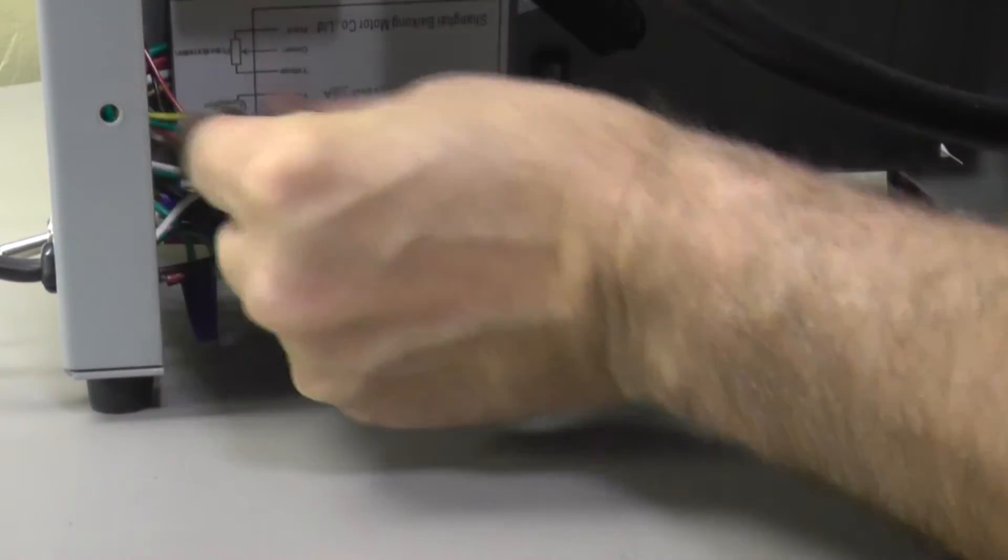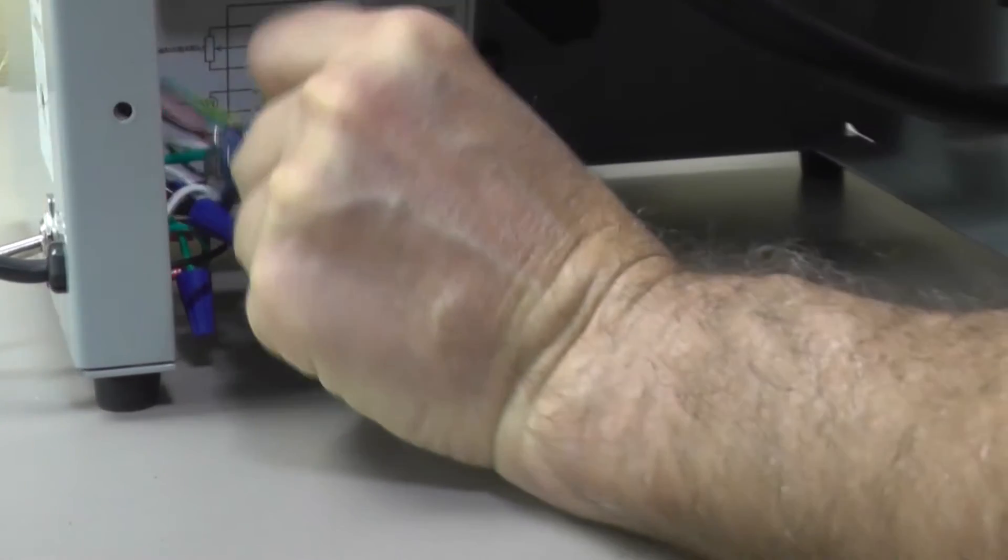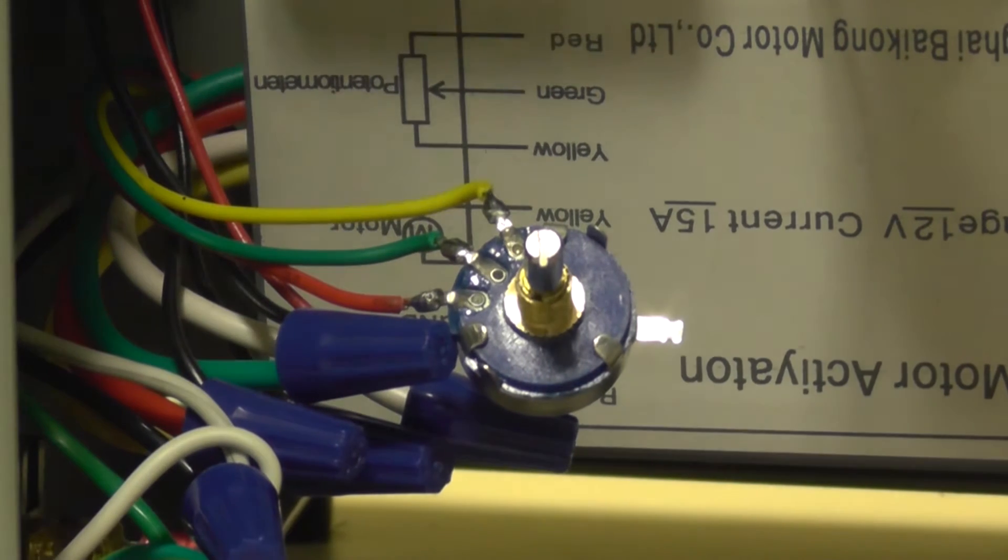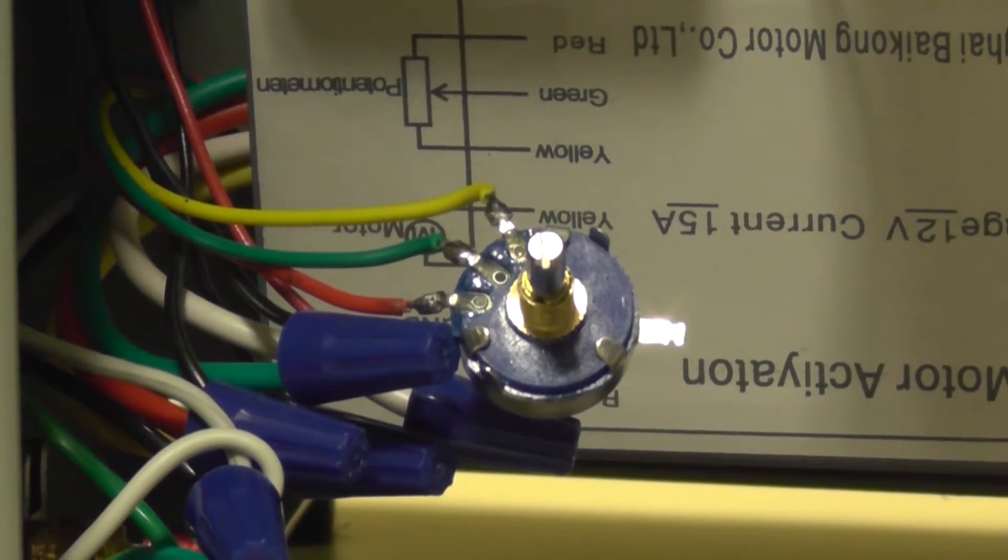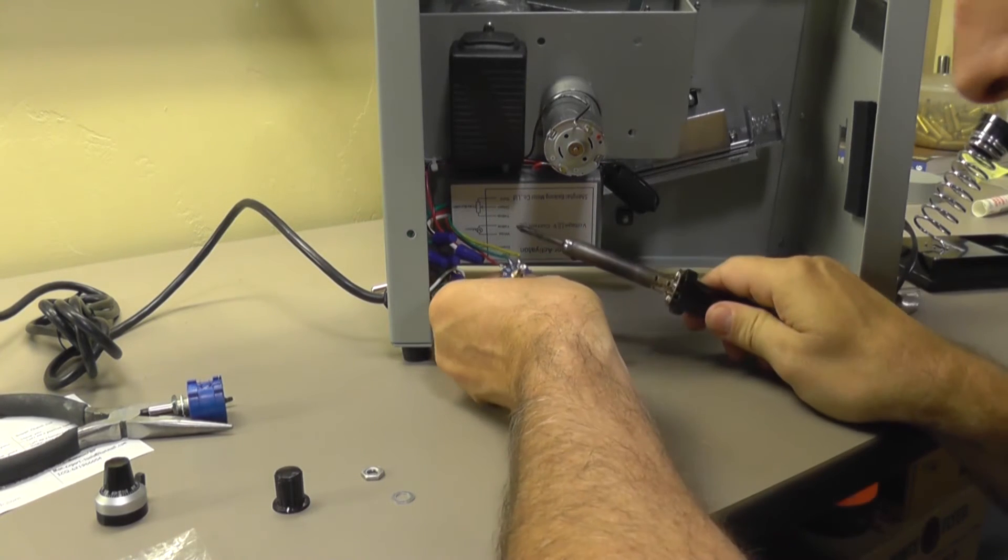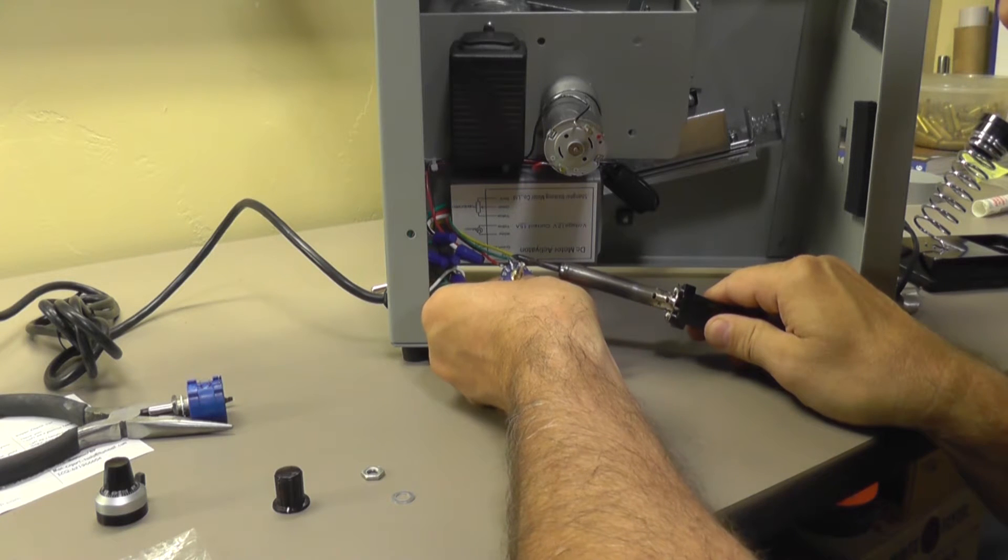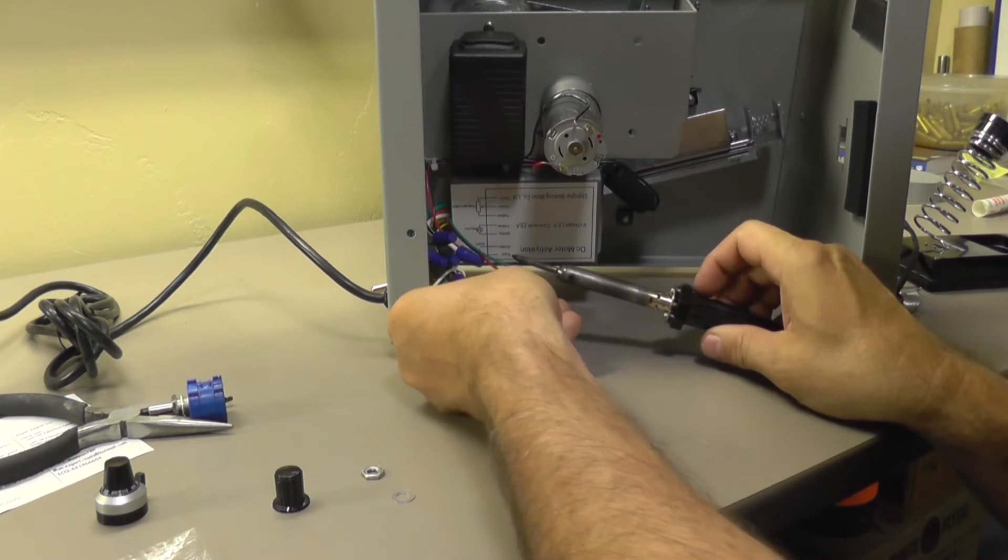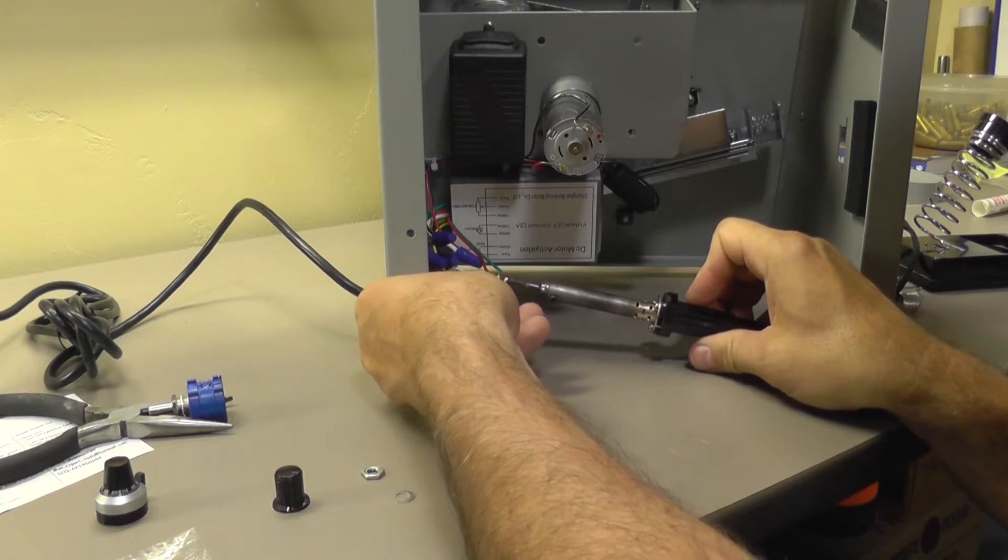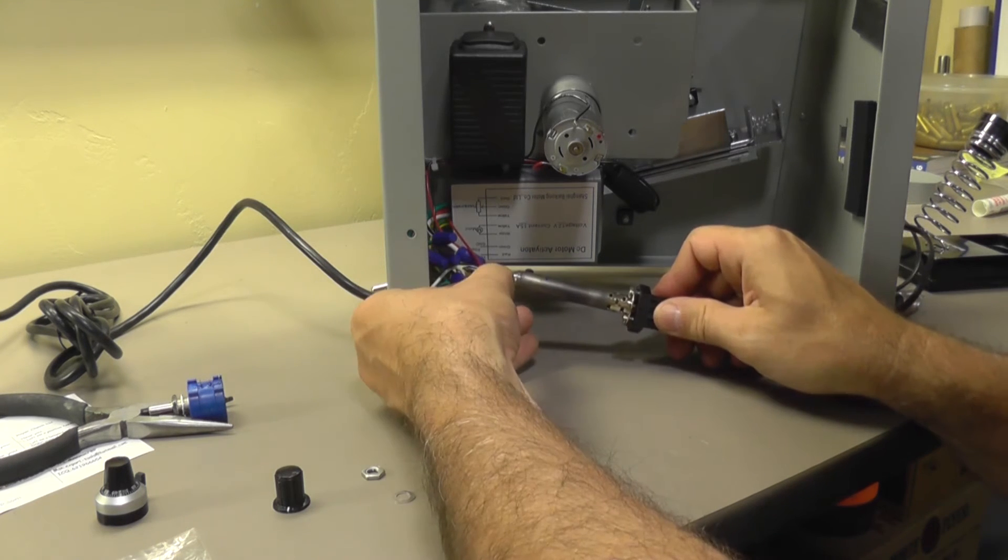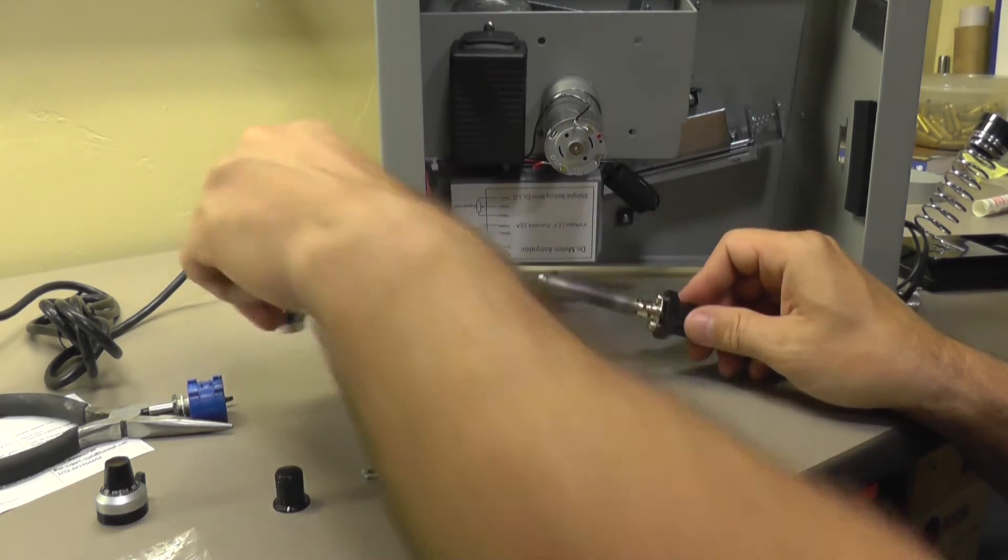Take that off. Pull this out. I'm going to unsolder those. Okay, there we go. Waiting for the soldering iron to heat up and then we'll get that off of there. My soldering iron is heated up. There we go.